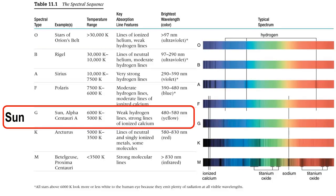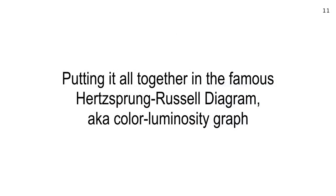We have these spectral types and it's really helpful to look at stars. Most stars fall into these seven spectral types. But then the other thing that's somewhat independent is how bright the star is — that's where the Hertzsprung-Russell diagram, the HR diagram, also known as the color-luminosity graph, comes in.